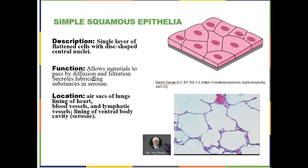First up is simple squamous epithelia. As the name implies, it is one layer of flat epithelial cells. The gray underneath it is the basement membrane. These tend, because they are thin, to allow materials to pass between them, and in some cases generate lubricating fluid. This example is the air sacs of your lung — you're looking at a sheet of cells sideways, like picking up a plate and looking at it thin side, like a frisbee.